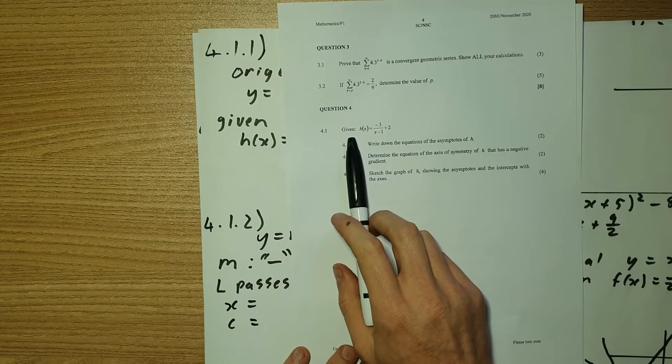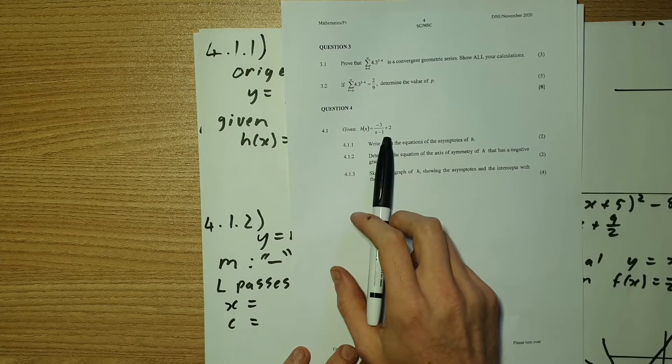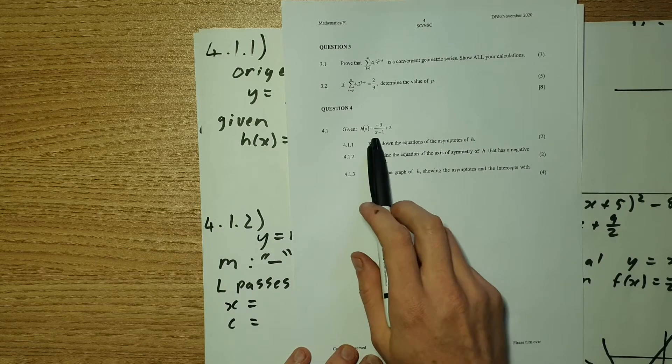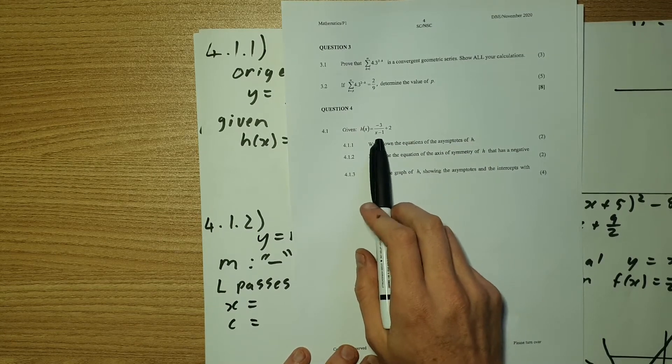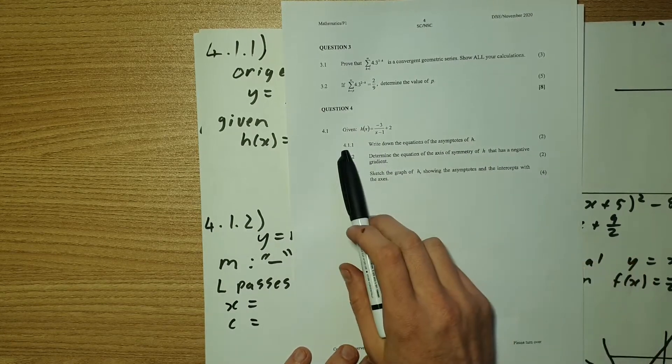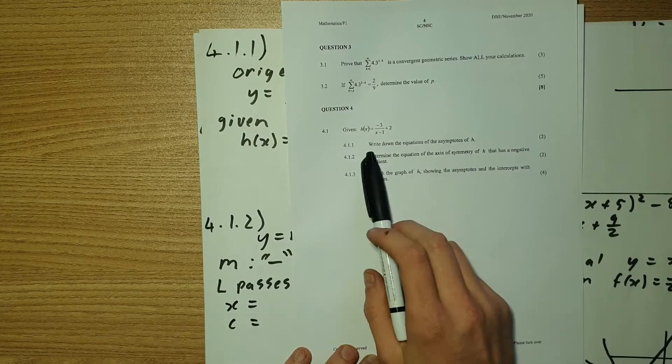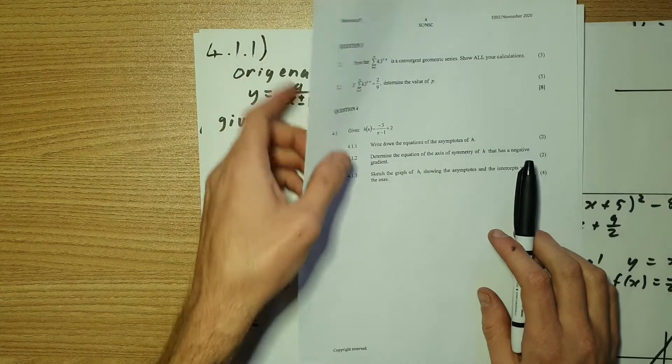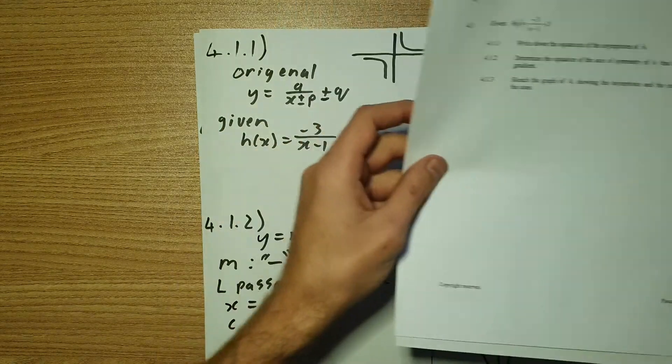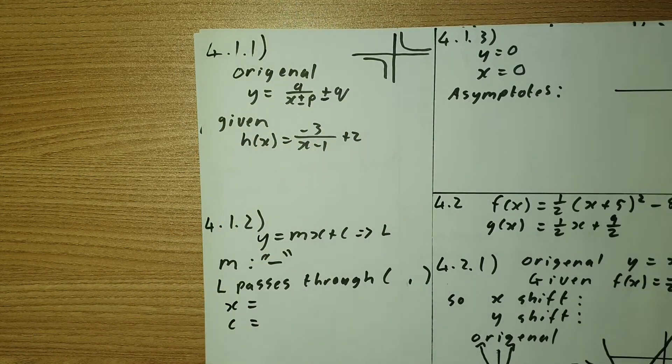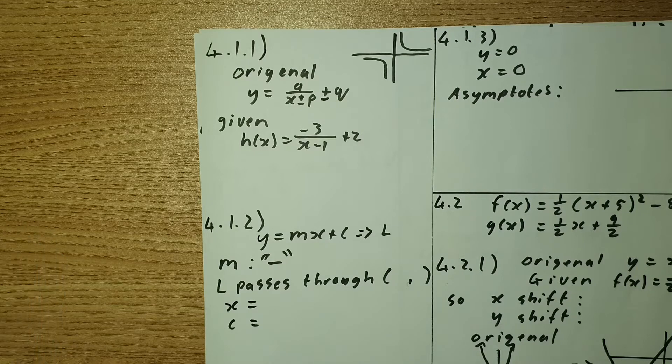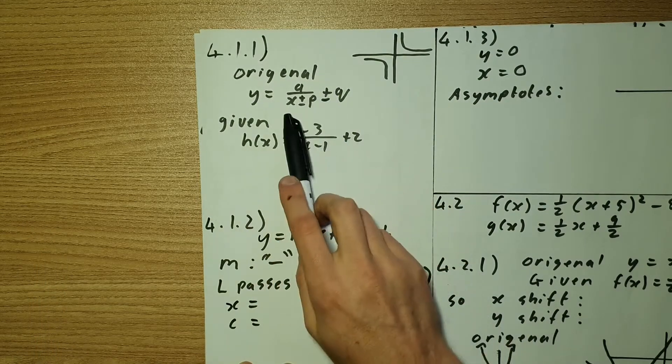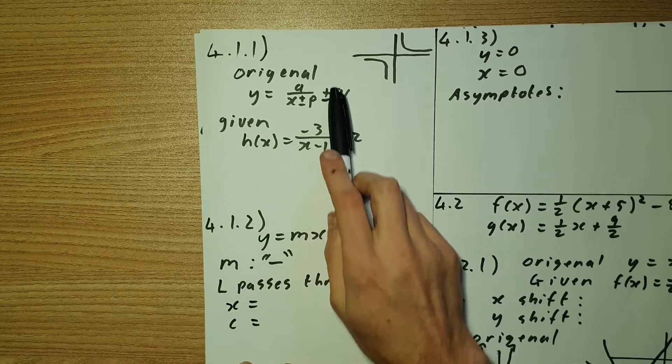So they've given us 4.1, they've given us the following function. Please note that this is a hyperbola as we have x at the bottom or in a fraction form and 4.1.1 says write down the equation of the asymptotes of h. So we need an x asymptote and a y asymptote. First of all let's note the original form is y equals a over x plus minus p plus minus q.